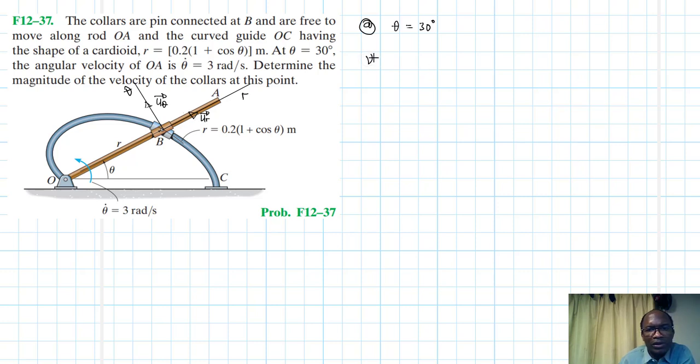Velocity as a vector will be V = V_r·U_r + V_θ·U_θ. V_r = Ṙ. R is given as R = 0.2(1 + cos θ), so Ṙ will be calculated.